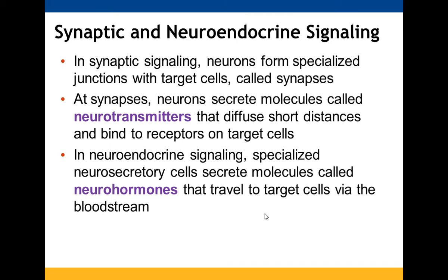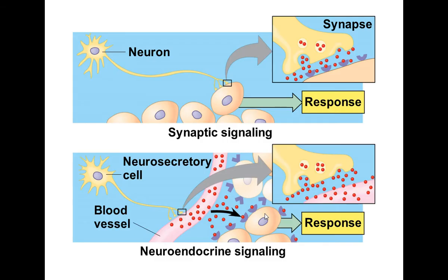At synapses, neurons secrete neurotransmitters that diffuse short distances and bind target cell receptors. With neuroendocrine signaling, specialized neurosecretory cells secrete neurohormones that travel to target cells via the bloodstream. The neuron signals at the synapse, releasing molecules that allow the target cell to respond.